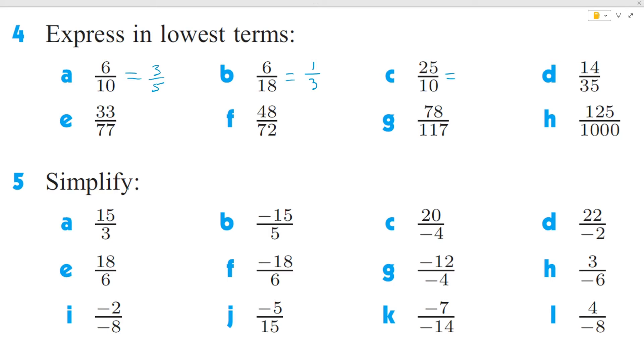For question C, I can notice that 25 contains a 5 and a 5, 10 contains a 5 and a 2. So if I divide the top and the bottom by 5, I'm left with 5 over 2.